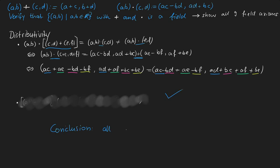Because all 9 axioms have been proven, we can conclude that the set of pairs (A,B) with the addition and multiplication defined above is indeed a field.